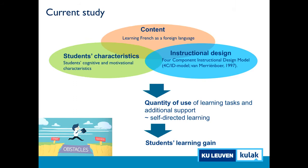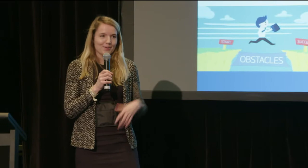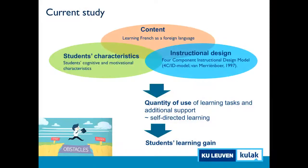In my current study, I selected specific aspects. The content is learning French as a foreign language, which is very important in Belgium because we have a very small country with already three official languages. For students' characteristics, I took into account cognitive and motivational characteristics based on prior research. The instructional design was systematically built using the four-component instructional design model. We also defined the quantity of use of learning tasks and additional support as an indication of students' self-directed learning and how this affects learning gain.